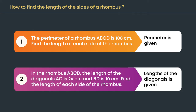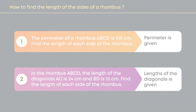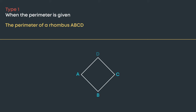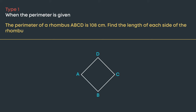Look at the first type of problem: the perimeter of a rhombus ABCD is 108 centimeters. Find the length of each side of the rhombus. In a rhombus, all the sides are equal and the perimeter of a rhombus is four times the length of each side.